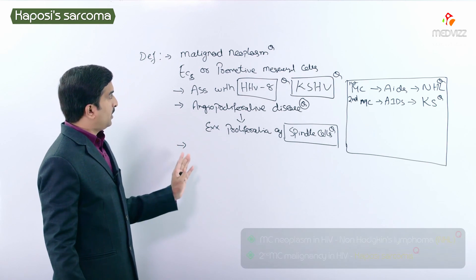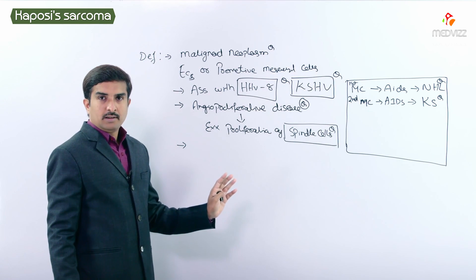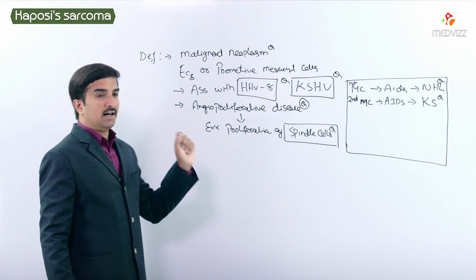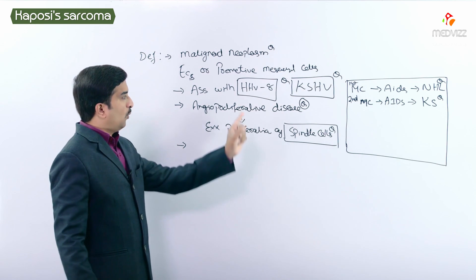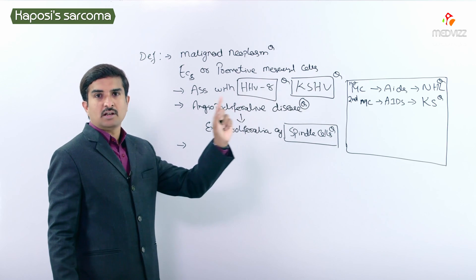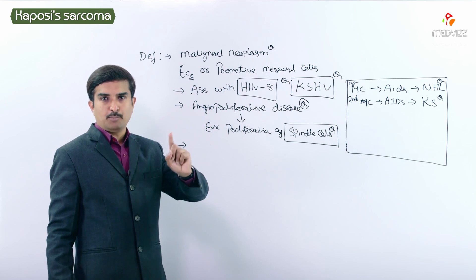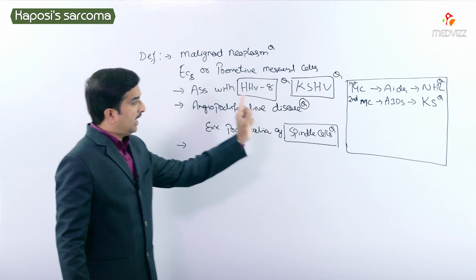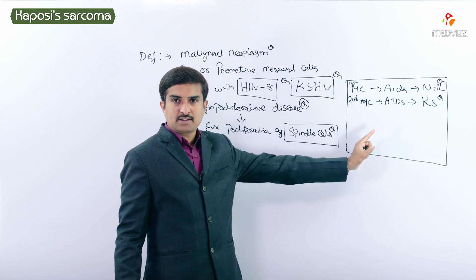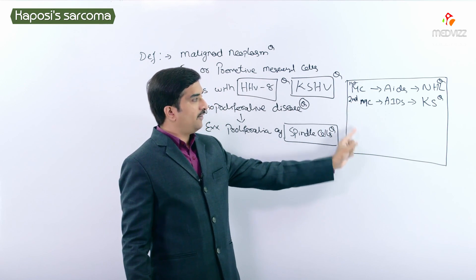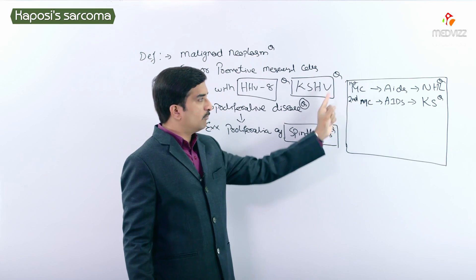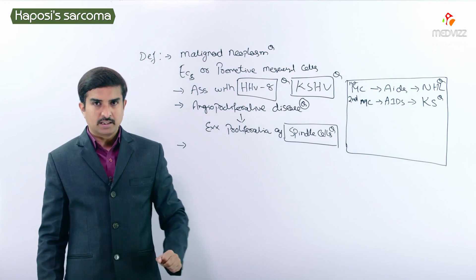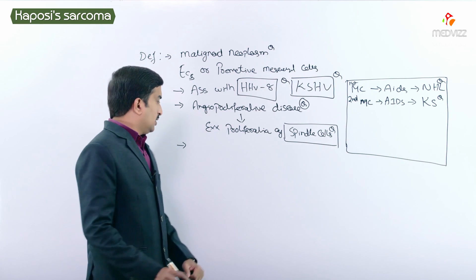To summarize what they will most often ask in the exam: the virus associated with Kaposi sarcoma is human herpesvirus 8; Kaposi sarcoma is the second most common malignancy associated with AIDS; and the most common is non-Hodgkin's lymphoma.